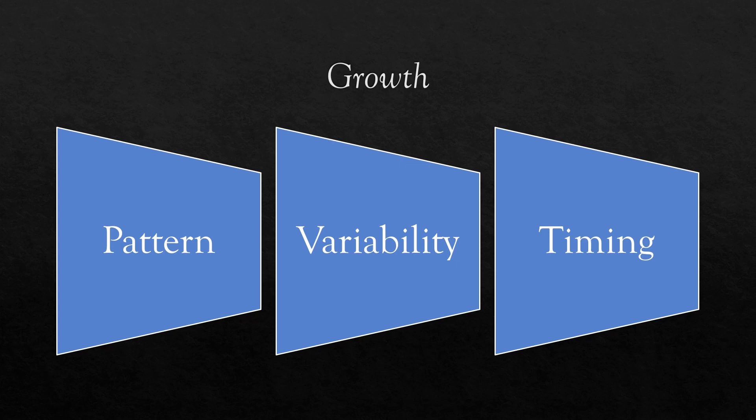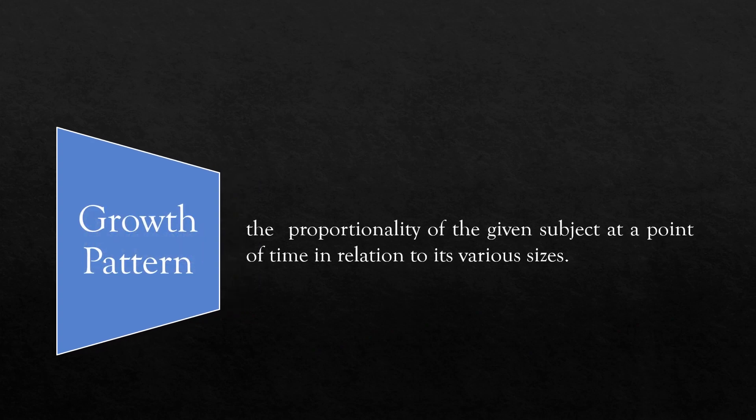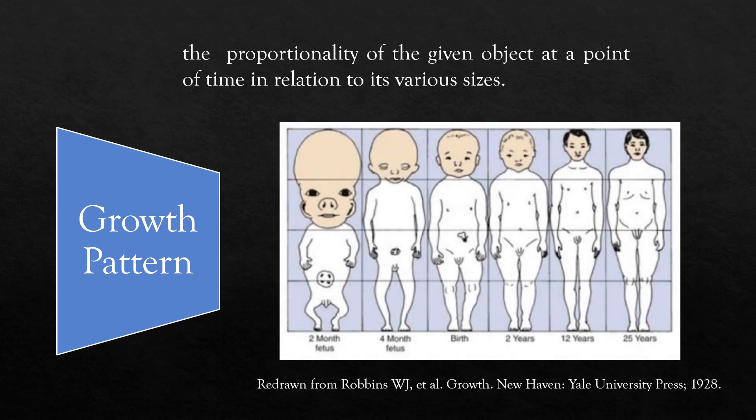There are three important features related to growth. The growth pattern refers to the proportionality of the given subject at a point of time in relation to its various size. The diagrammatic representation of the cephalocaudal growth pattern is a good illustration for the proportional changes that occur through aging. Note the relative increase in the caudal portion growth relative to the cephalic parts with increasing age. During the first trimester of intrauterine life, the head portion takes about half of the whole body, while this ratio decreases to 1 over 12 with the body part growing faster.